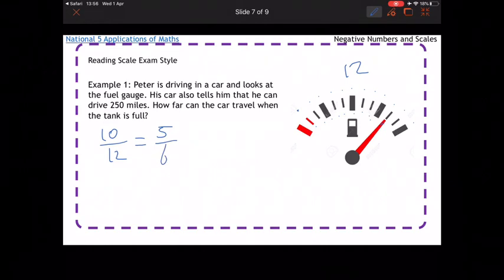So when it's 5 over 6, it means that the car can drive 250 miles, just as it says there. So if 5 over 6 is 250, what you've got to do is find 1 sixth. So 1 sixth, you're going to divide 250 by 5, which gives you 50.